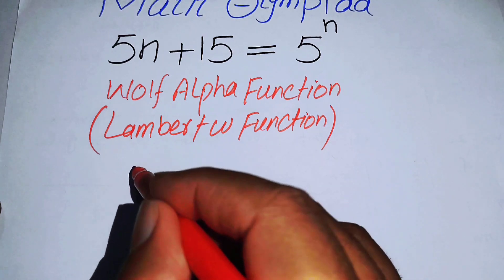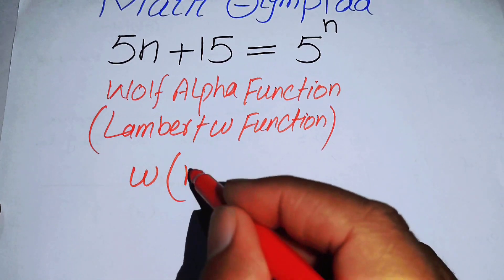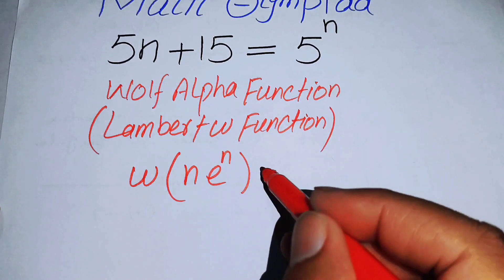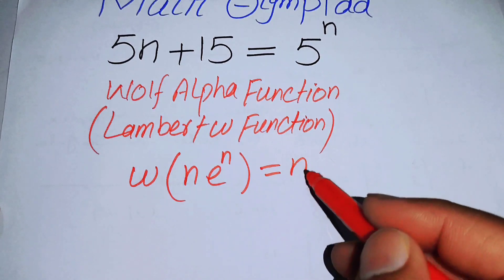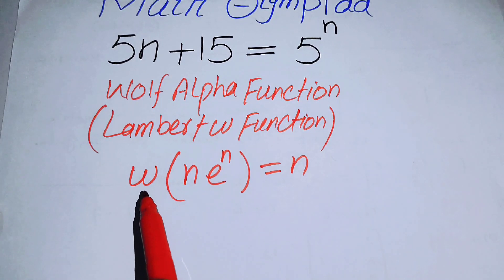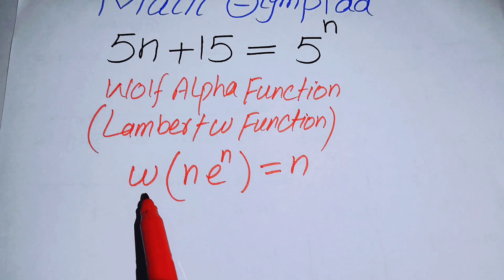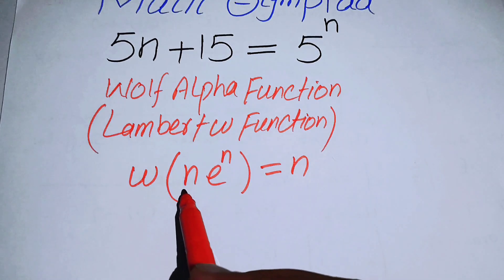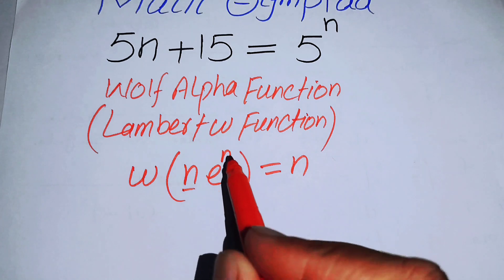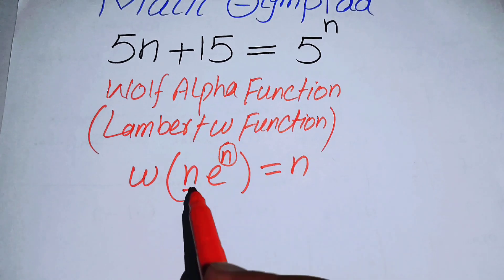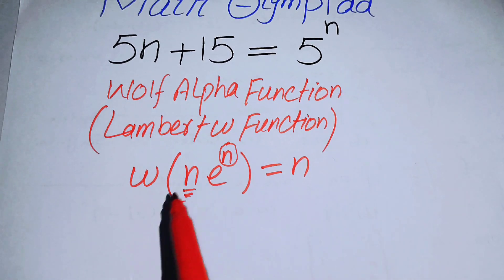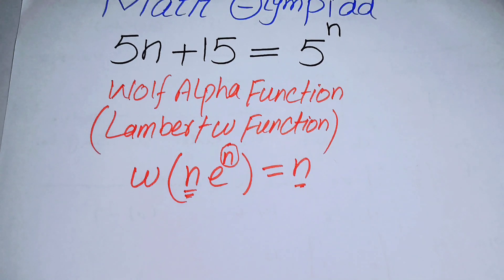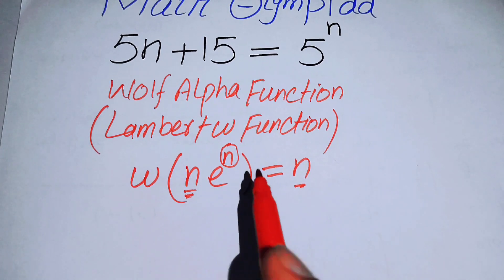Let me briefly introduce the Lambert W function. It is in this form: W of n times e to the power of n equals n. That is, if you have n times e to the power of n under the W function, the output is simply n.